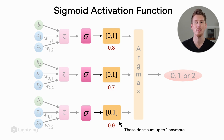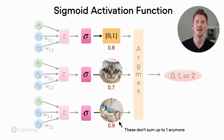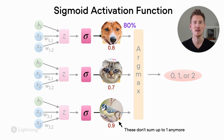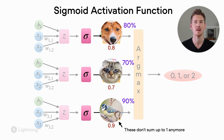For example, if we have a classification problem where we classify bird, cat, and dog, we might have an 80% predicted probability that an image belongs to a dog, 70% that it might be a cat, and 90% that it might be a bird.